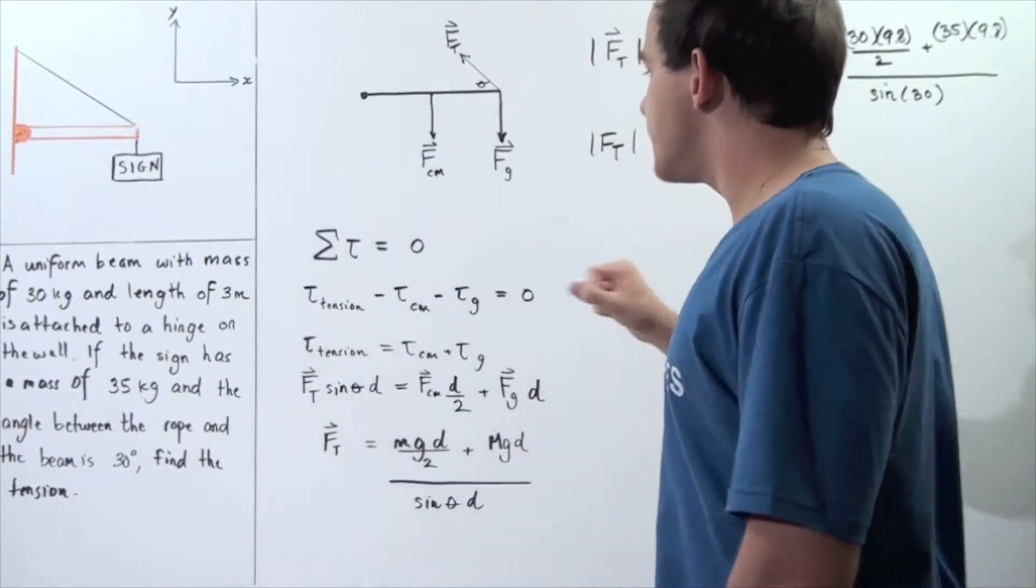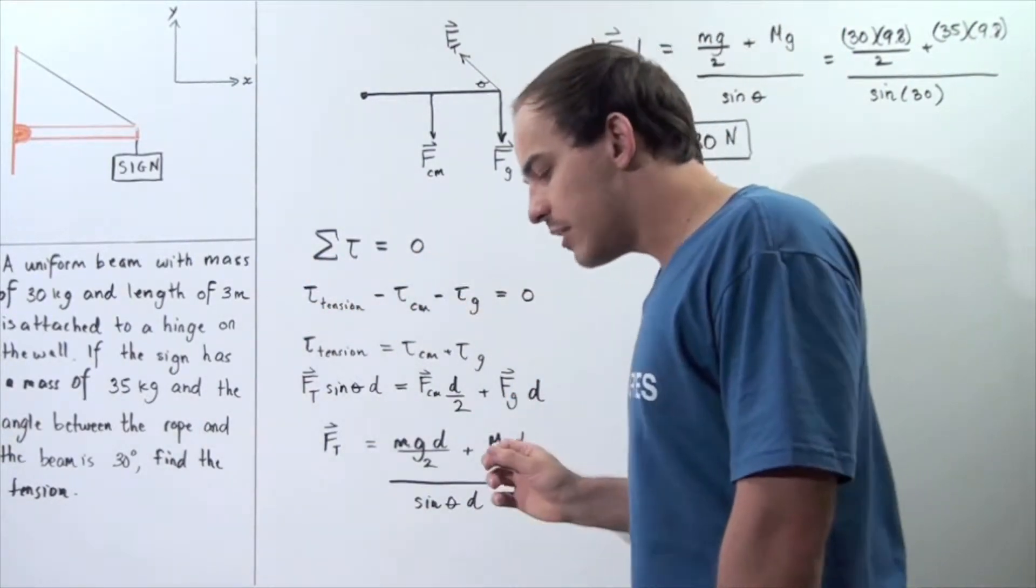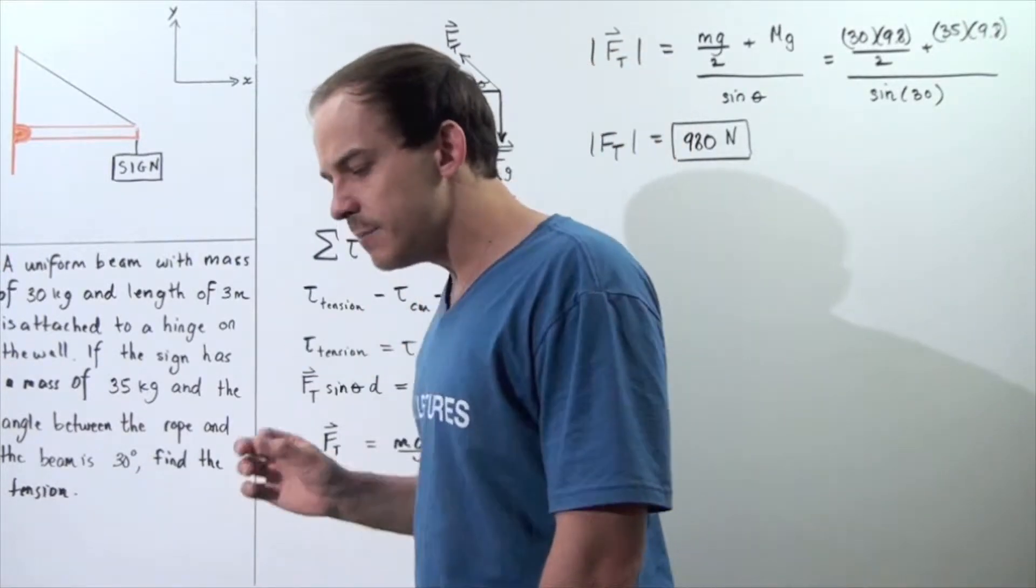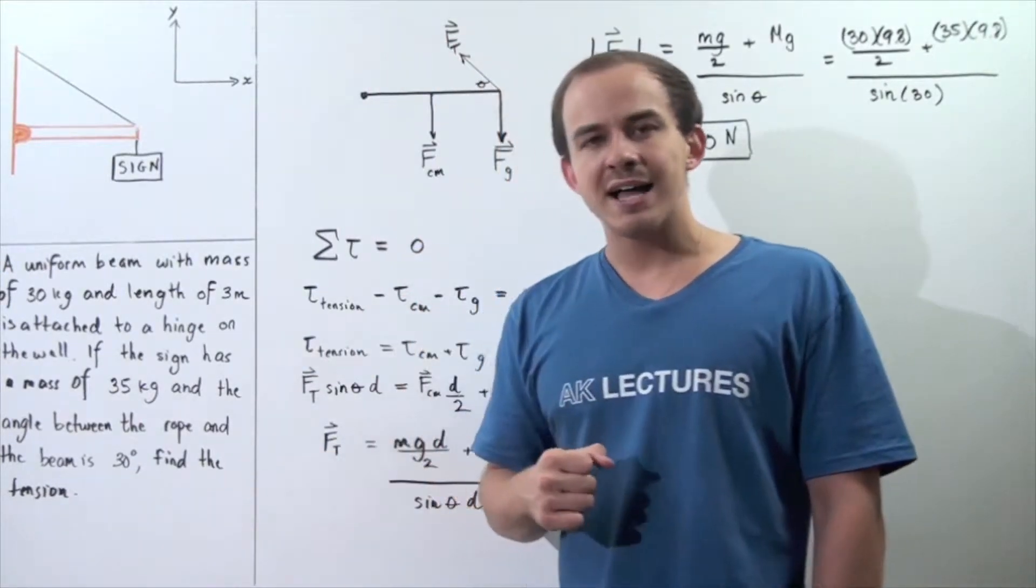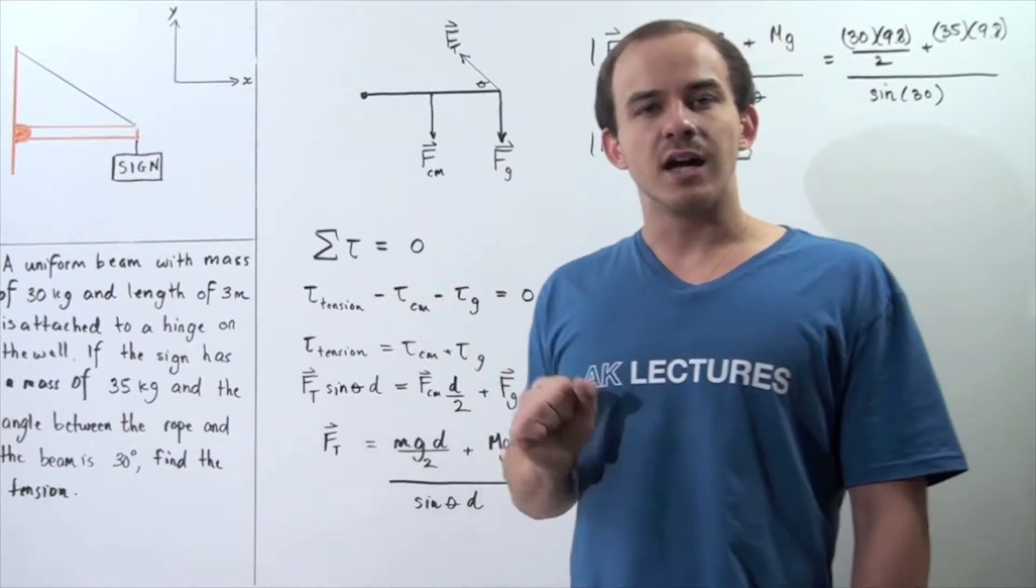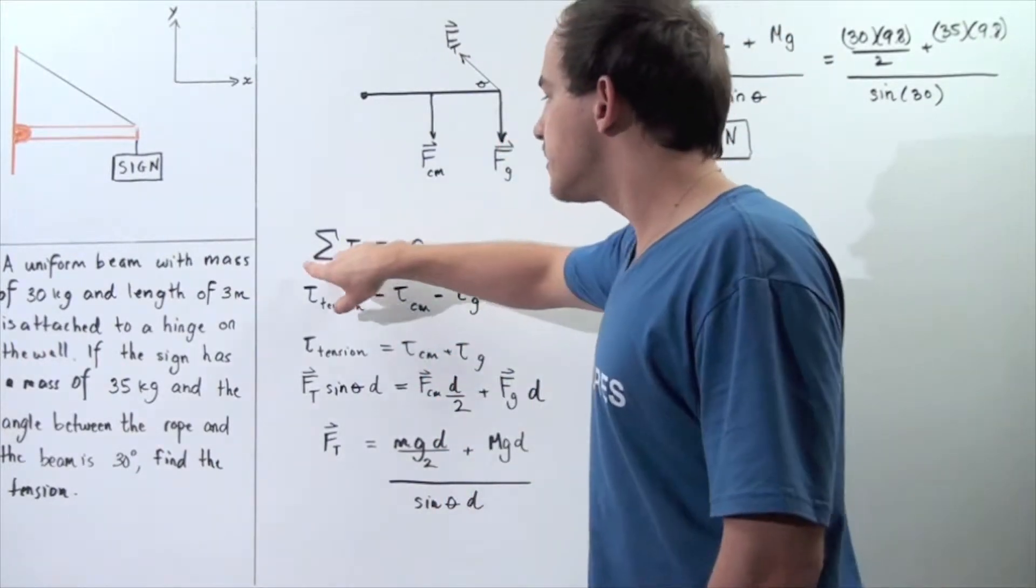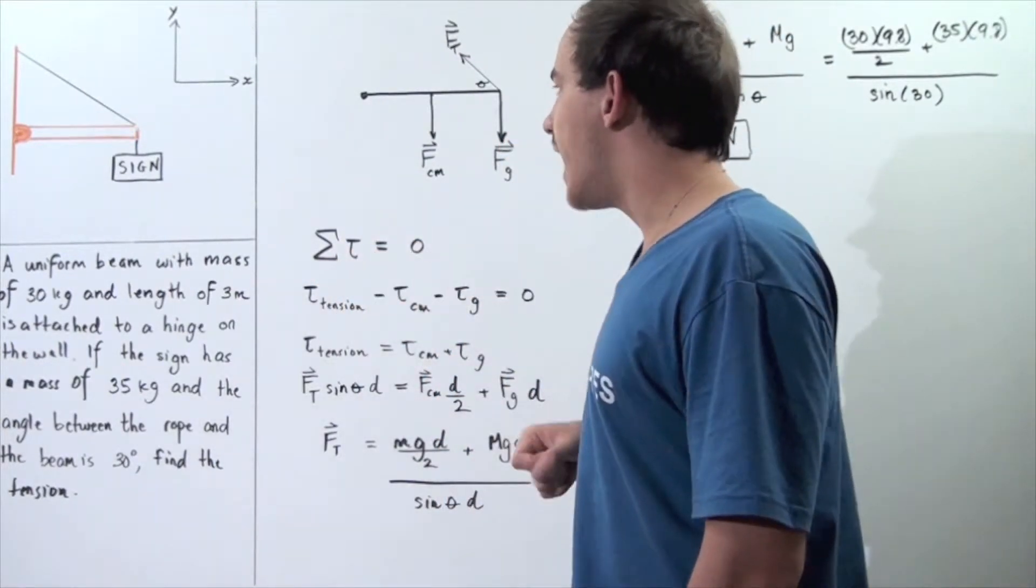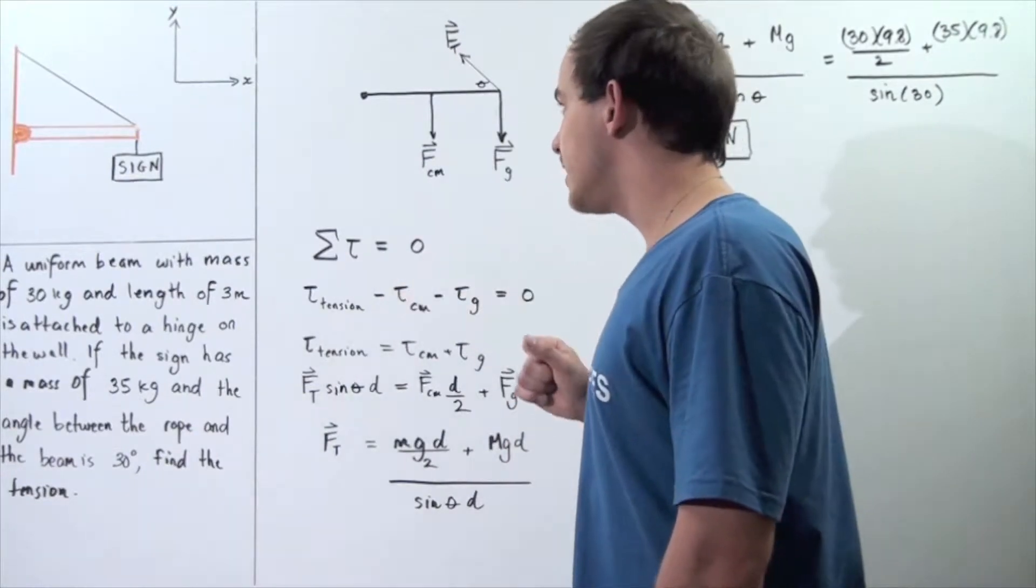Now, knowing this, let's begin. Recall that because our beam is in static equilibrium, that simply implies that the net torque acting on the beam is zero. The sum of the torques acting on the beam is equal to zero.